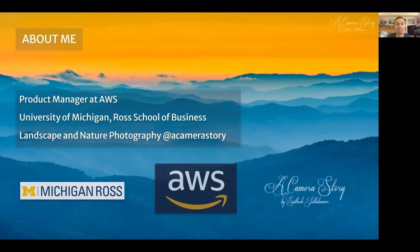A little bit about me. I have been at AWS as a product manager for the last three years. Currently, I'm in the machine learning team, and previously, I was in the Elastic Compute Cloud team. As you can imagine, at AWS, we rely heavily on data to make decisions, and being conversant in data analytics is key to being a successful product manager here. I'm also an alum from the University of Michigan Ross School of Business. When I get time, I'd like to go out and take photographs. You can find me at a camera store where I mainly focus on landscape and nature photography. What you see behind is one of my images from a sunrise at the Great Smoky Mountains National Park.